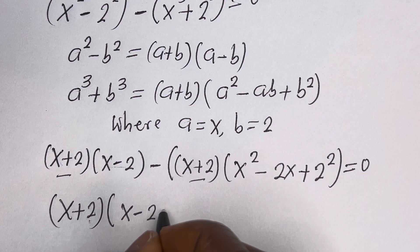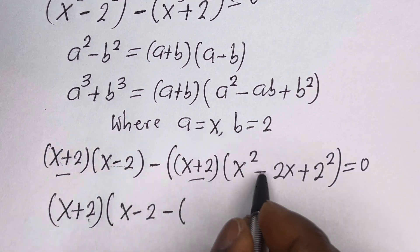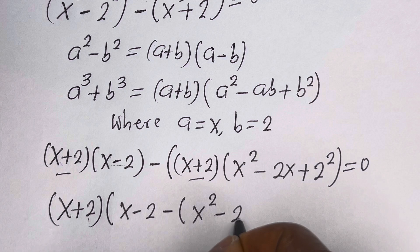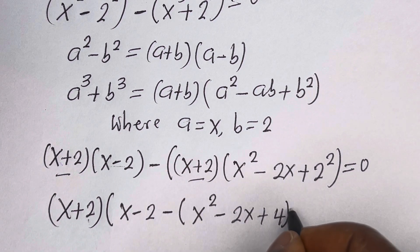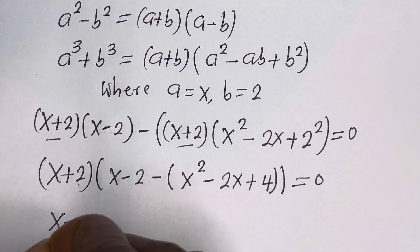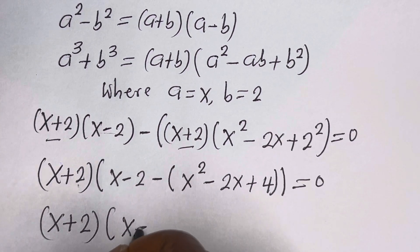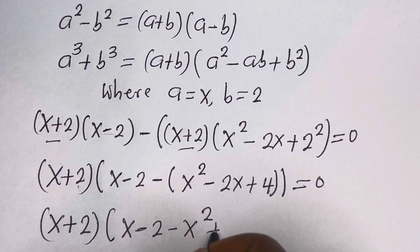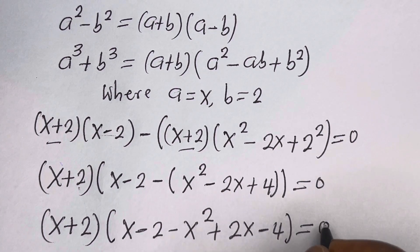Dividing through, we have s squared minus 2s plus 4, that is 2 squared equals 4. This gives us s plus 2 bracket s minus 2 minus s squared plus 2s minus 4 is equal to 0.